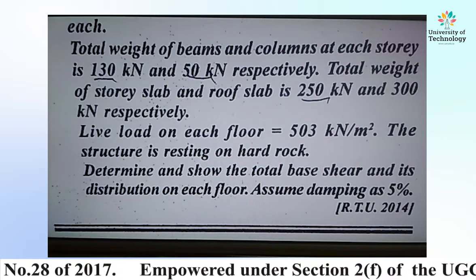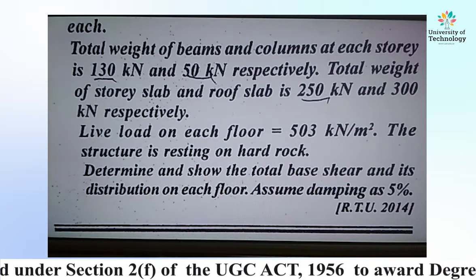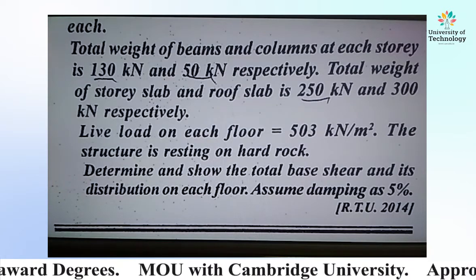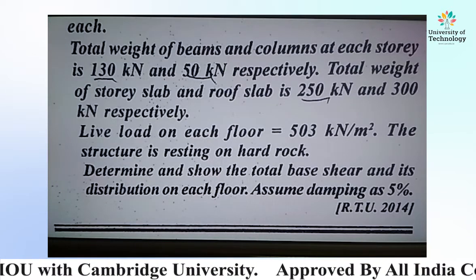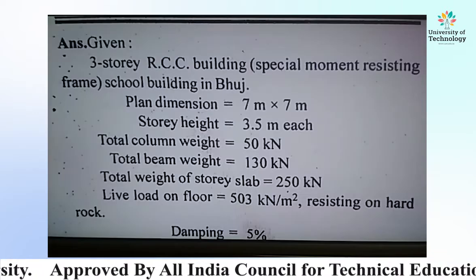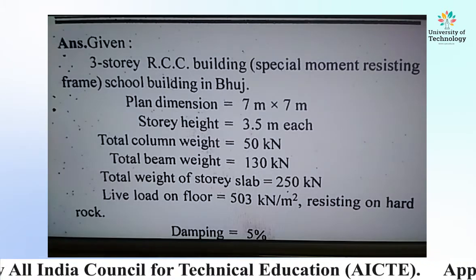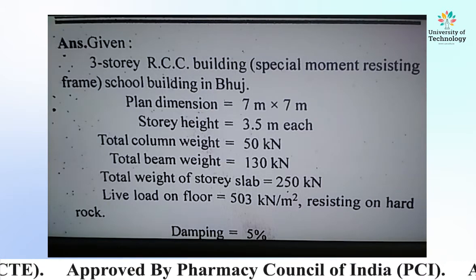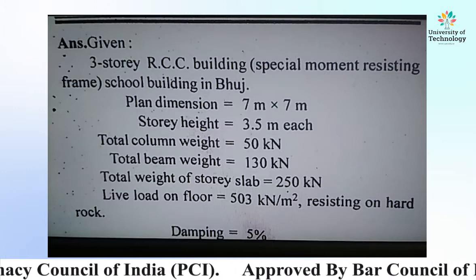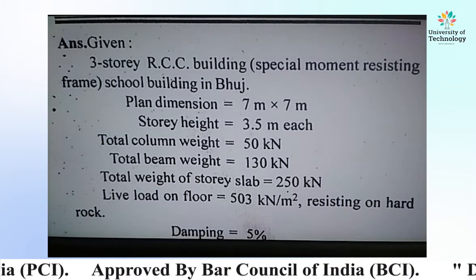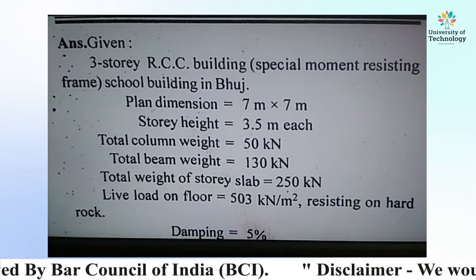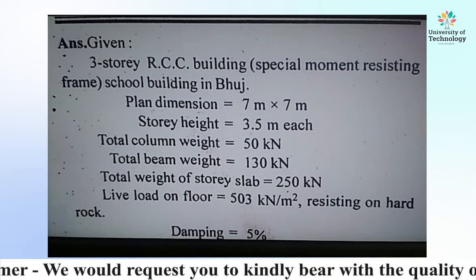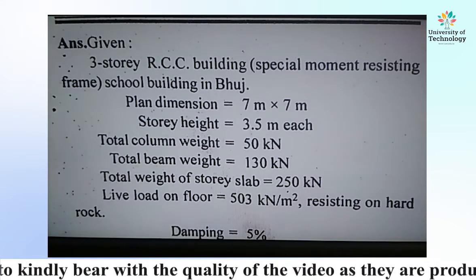Similar types of questions are generally asked in RTU exams as well as other university exams. So let me solve this numerical. The given data: three-storey RCC building, special moment resisting frame, location is Bhuj, type of building is school (educational building), plan dimension is 7 meter by 7 meter, story height is 3.5 meter each.